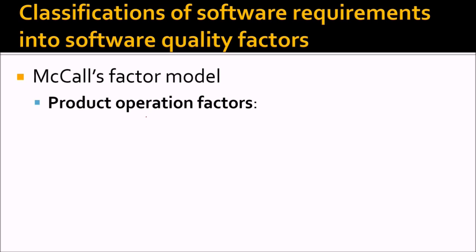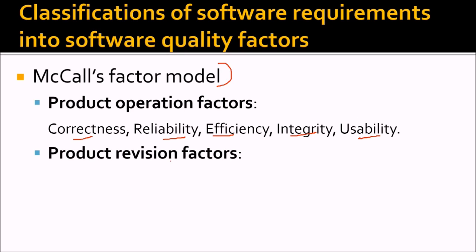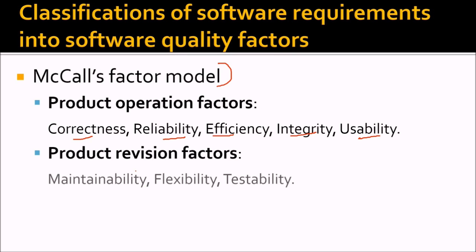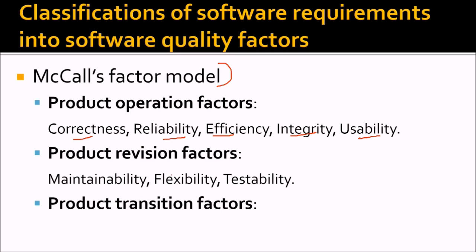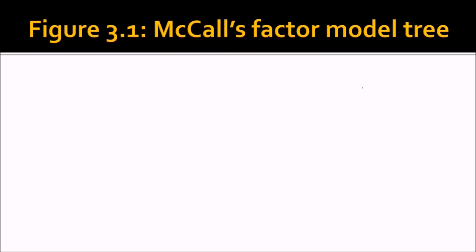McCall's model classifies software quality into three different categories. First is product operation factors — when the product is operating, it requires correctness, reliability, efficiency, integrity, and usability. For product revision, the factors are maintainability, flexibility, and testability. For product transition, the factors are portability, reusability, and interoperability.